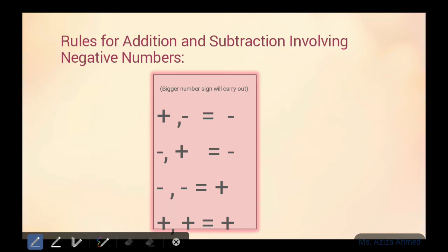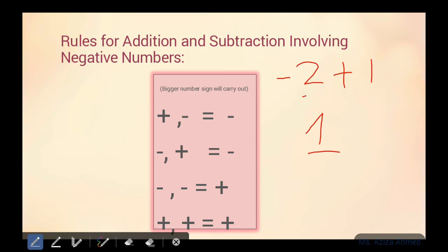Ab ek aur confusion yahan aati hai ke answer mein kis ka sign dein — plus ka ya minus ka? For example, minus two plus one: minus plus minus, two mein se one ko minus kiya, one aayega. Magar ab kaise pata chale ke iske saath plus ka sign aana chahiye ya minus ka answer mein? Toh iske liye ek chhoti si baat yaad rakhein: jab bhi bigger numerical value hogi, jis term ki bigger numerical value hogi, us number ka sign aap answer mein likhenge. Toh ismein big numerical value kiski hai — two ki hai ya one ki? Definitely two. Toh uske saath minus ka sign hai, toh answer mein bhi minus ka sign aayega. Answer: negative one. Jo number bada hoga, jis ki quantity zyada hogi, uska sign hum answer mein add kar denge.